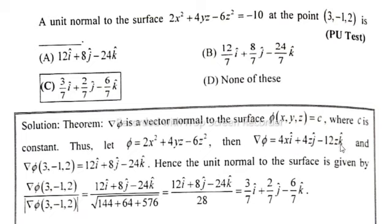Hence the unit normal vector to the surface is given by ∇φ(3,-1,2) divided by |∇φ(3,-1,2)|. So gradient φ value that is 12i + 8j - 24k divided by the magnitude...